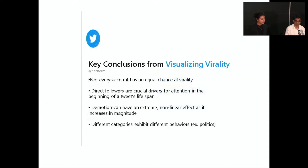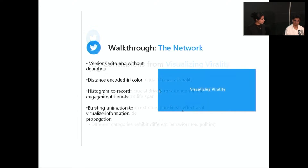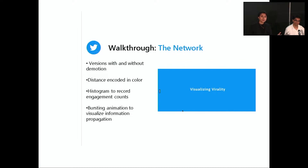There are a few key conclusions from these experiments. First, not every account has an equal chance of going viral — over one-third come from accounts with over one million followers, and around two-thirds come from very large accounts with over one hundred thousand followers. We also found that direct followers are extremely crucial drivers of the lifespan and overall virality of a tweet. Early in the network, the proportion is almost entirely blue — direct followers — and only later do pinks and purples start to come in. Without that initial boost from your direct network, you won't see the same success.